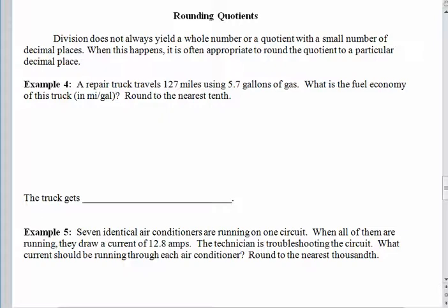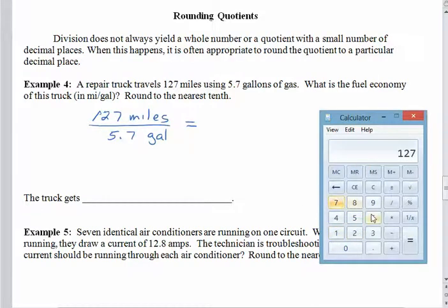So, for example, we have a repair truck traveling 127 miles using 5.7 gallons of gas. Not the greatest gas mileage, but not too bad either. Let's calculate it. What is the fuel economy of this truck? We would like miles per gallon. We've already talked about units involving the word per, so we know that we need to take these 127 miles and divide by the 5.7 gallons of gas. Alright, grab our handy dandy calculator here. 127 miles divided by the 5.7 gallons of gas. And wow, that's a lot of decimal places. We certainly don't want to write all of those down and many of those wouldn't even be relevant to us anyway.